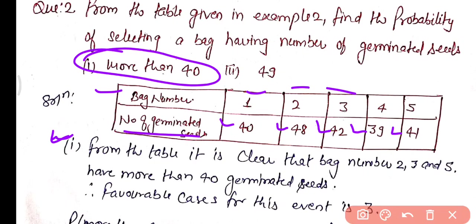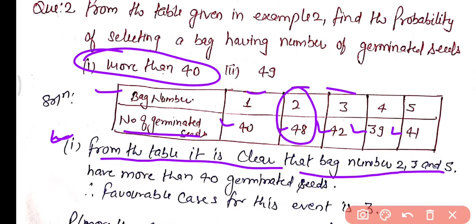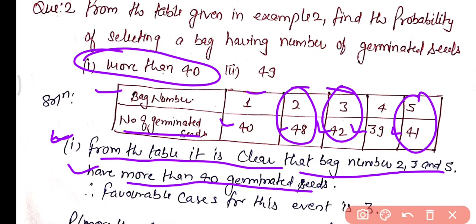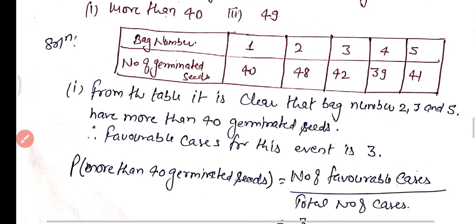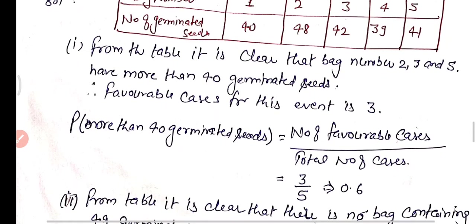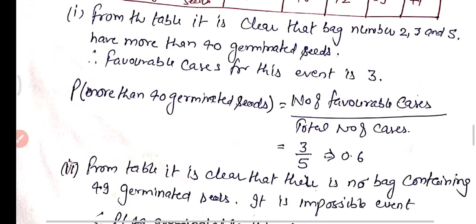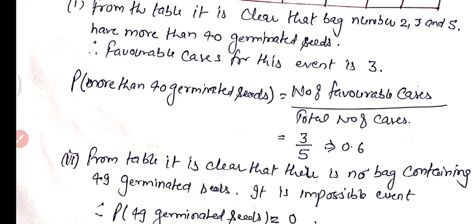From the table, it is clear that bag numbers 2, 3, and 5 have more than 40 germinated seeds — so there are 3 favorable bags. The total number of bags is 5. Therefore, the probability that a bag has more than 40 germinated seeds is 3 upon 5, which equals 0.6.